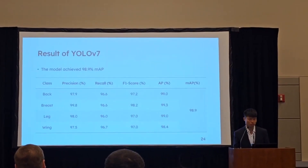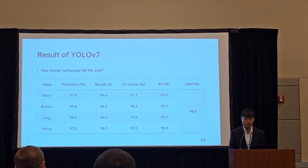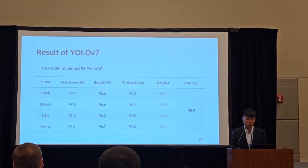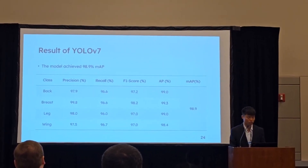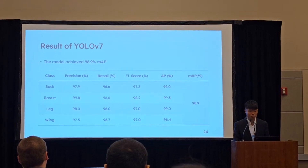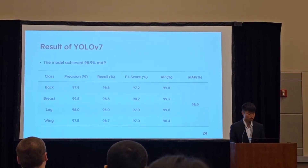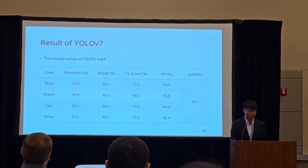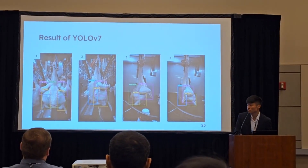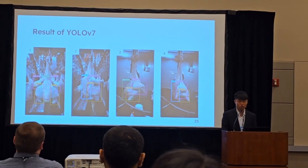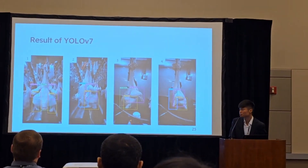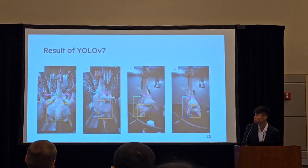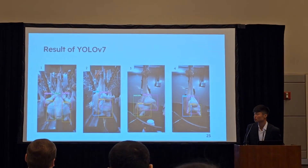First is the result of the YOLOv7 model. mAP is an indicator of how good the object detection model is, and the model achieves 98.9% mAP. In each class, the AP can exceed 98%. The following page shows the results of four real cases — you can see that the carcass is facing the camera at an arbitrary angle, but the model can still detect the body parts correctly.